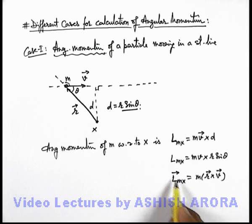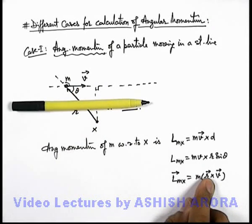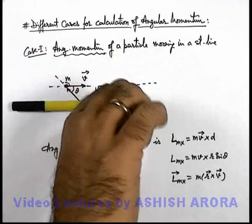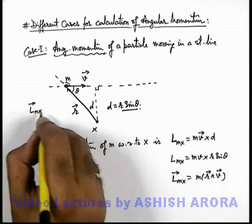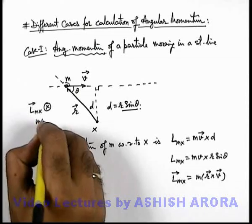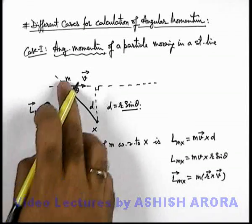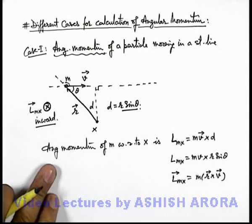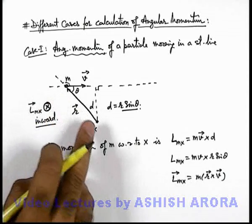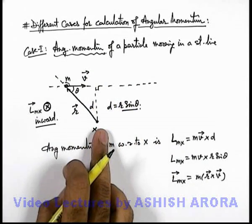The direction of the angular momentum vector is normal to both r and v vectors. Using the right-hand thumb rule, rotating fingers from r to v, the thumb points in the downward direction — so the direction of L for m with respect to x is inward, represented by a cross in a circle. If a particle were moving from right to left, its angular momentum would be in the upward direction. So angular momentum equals linear momentum times the shortest distance of the line of motion from the reference point.